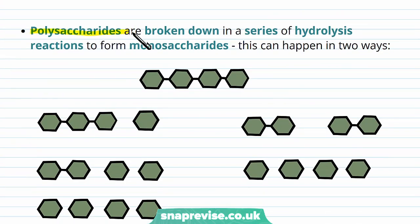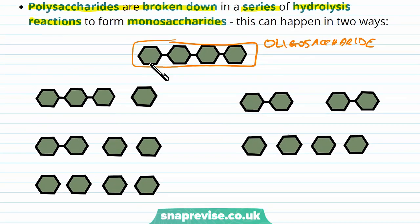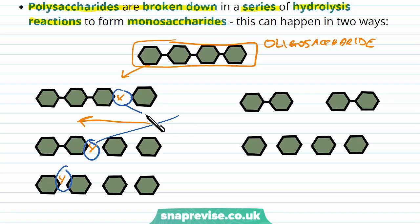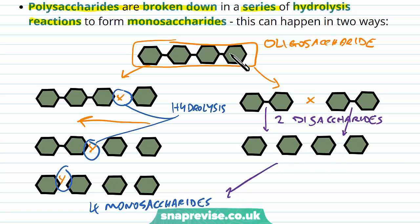In the reverse of this, polysaccharides are broken down by the reverse of condensation, which is hydrolysis — a series of hydrolysis reactions to form individual monosaccharides. This can happen in a couple of ways. We can snip off one monosaccharide at a time from the chain, with every snip being a hydrolysis reaction, leaving us with individual monosaccharides. Alternatively, the oligosaccharide can be snapped in half to give two disaccharides, which are then each broken down into individual monosaccharides. Either way, it's always done by hydrolysis reaction.